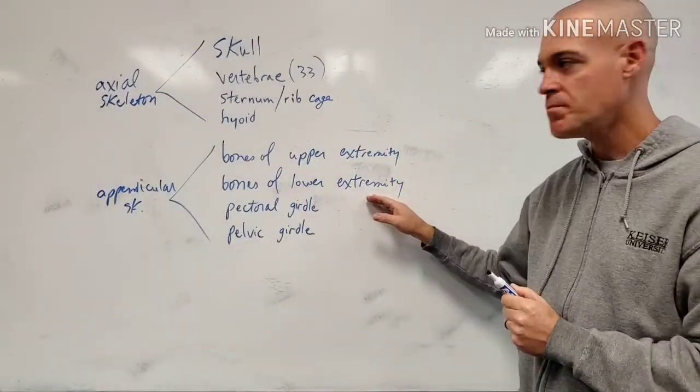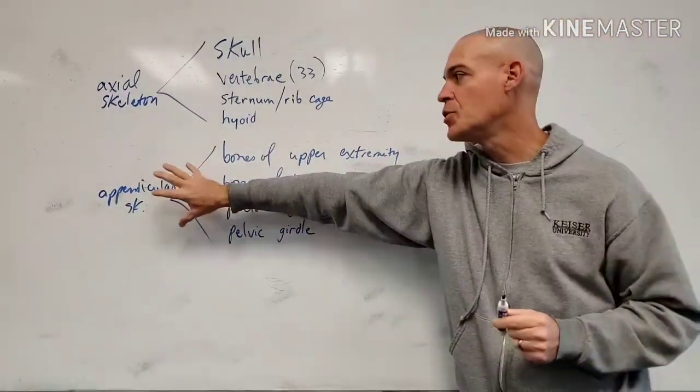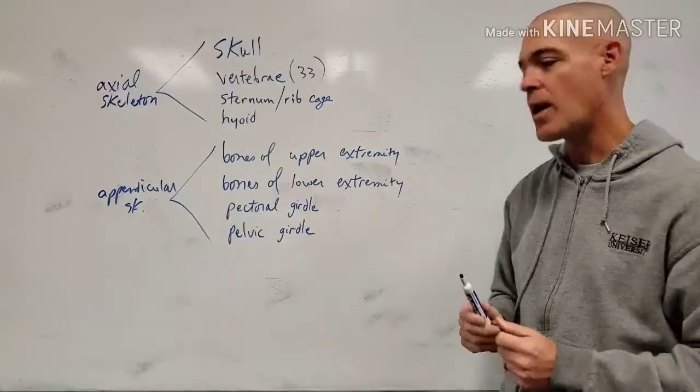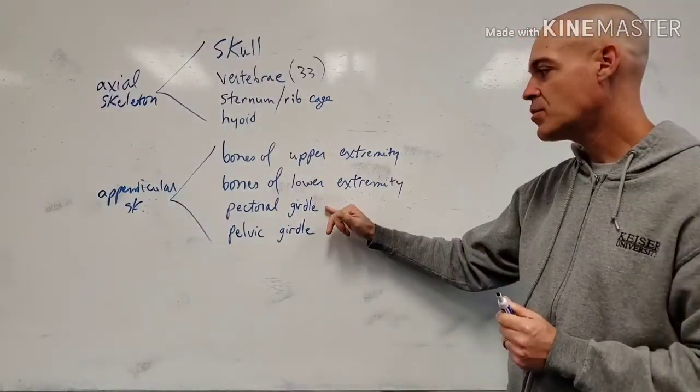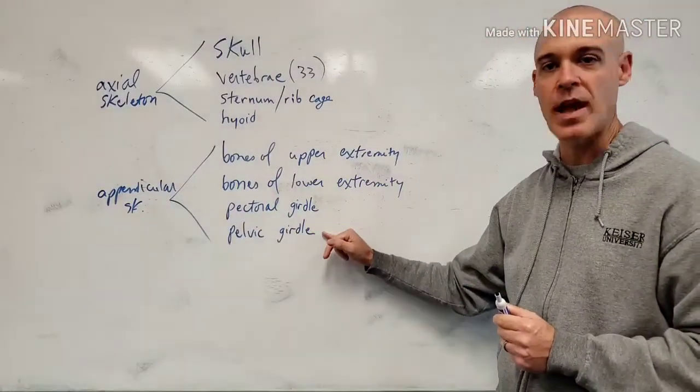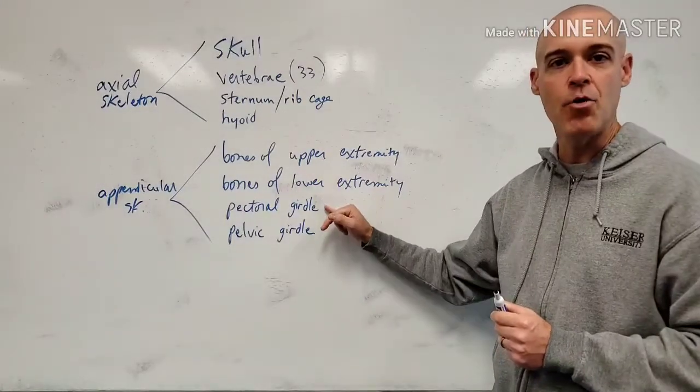All the bones of the lower extremity. Which is why we give the term appendage for appendicular. And then the pectoral girdle and pelvic girdle. These are the parts that some people might not know or forget.